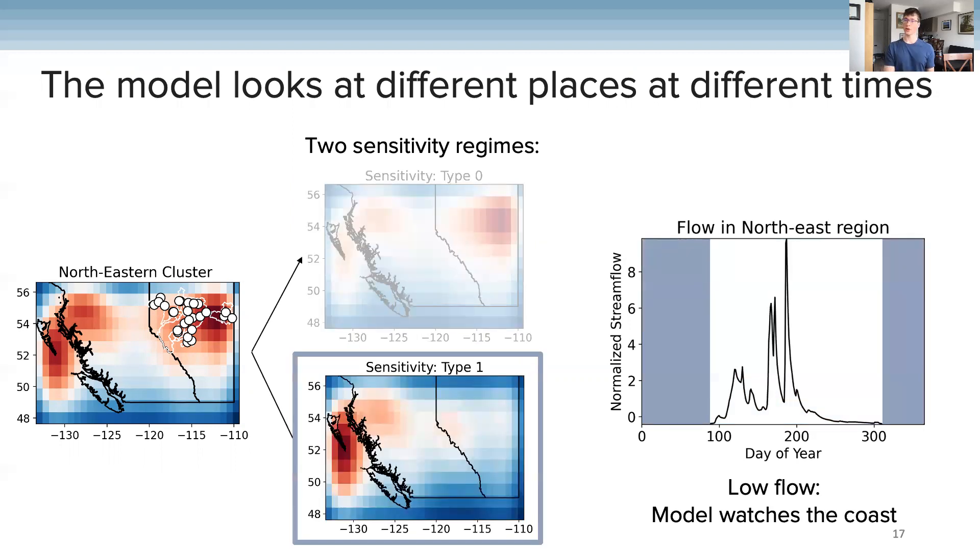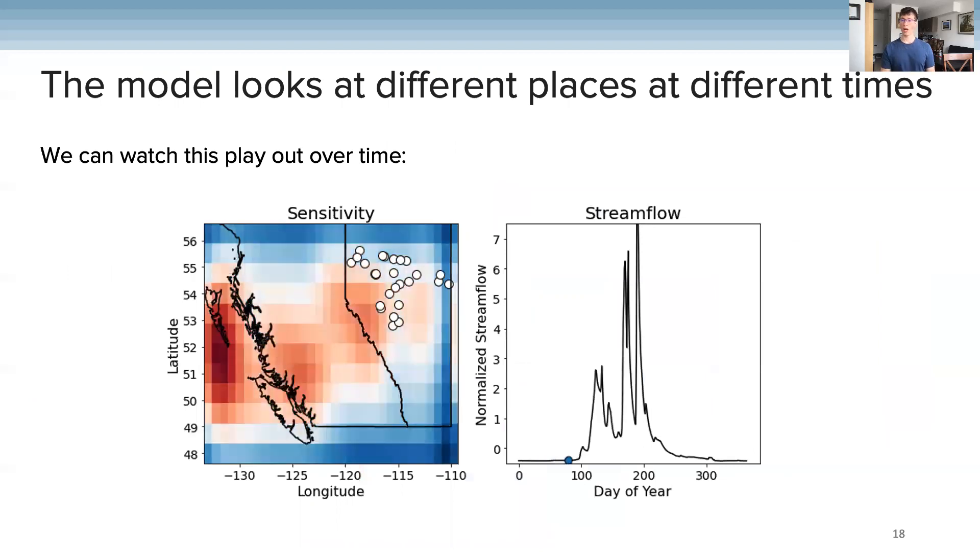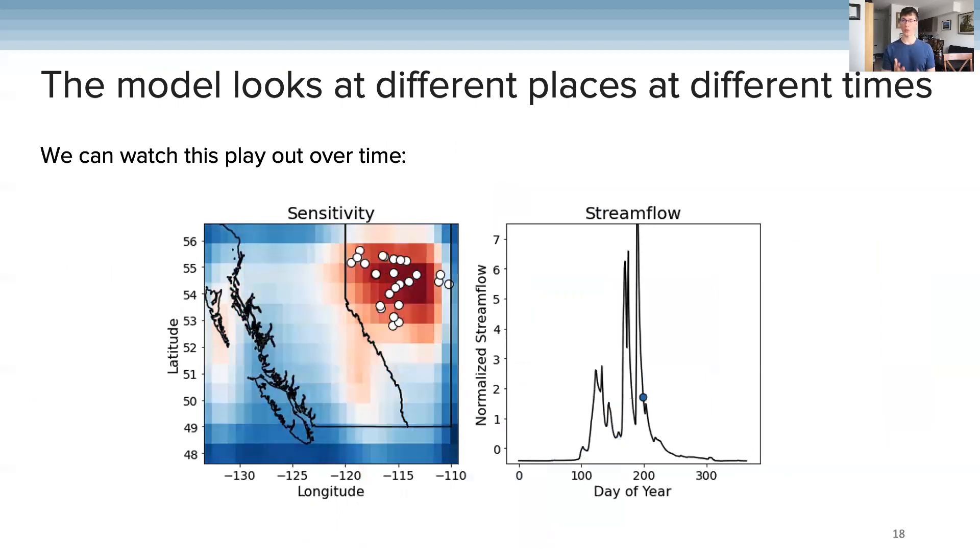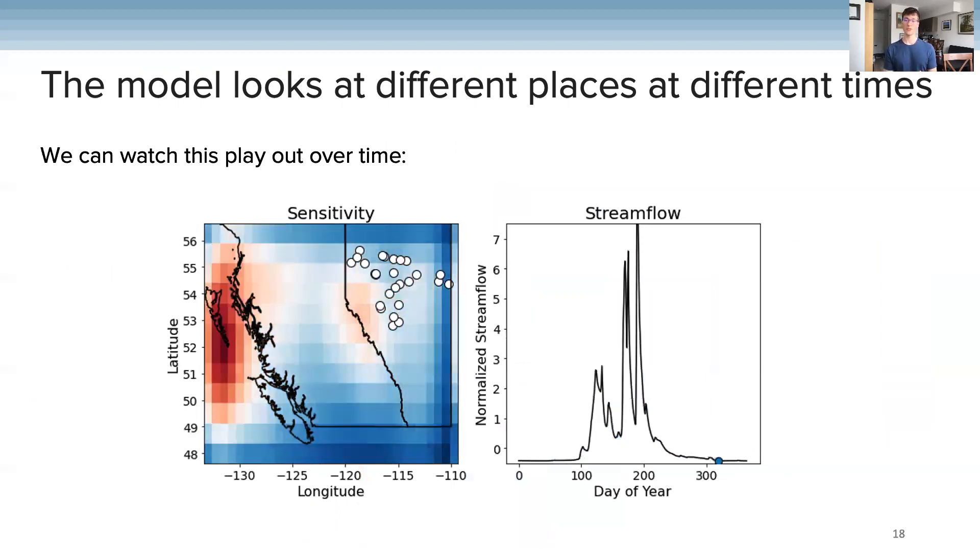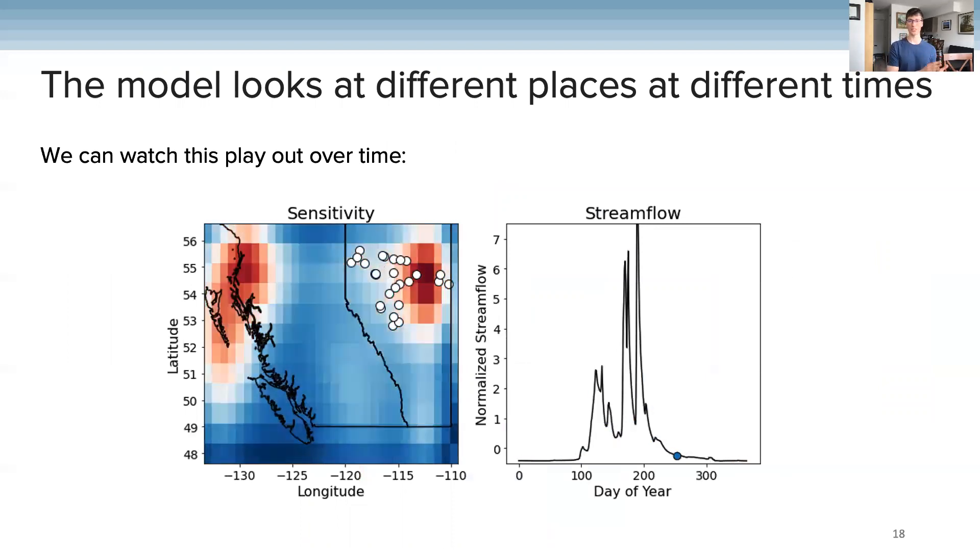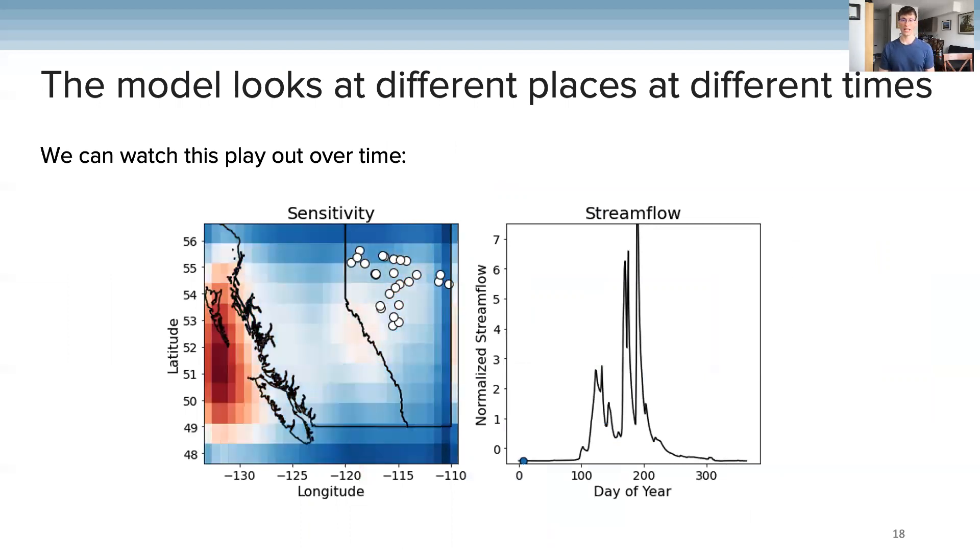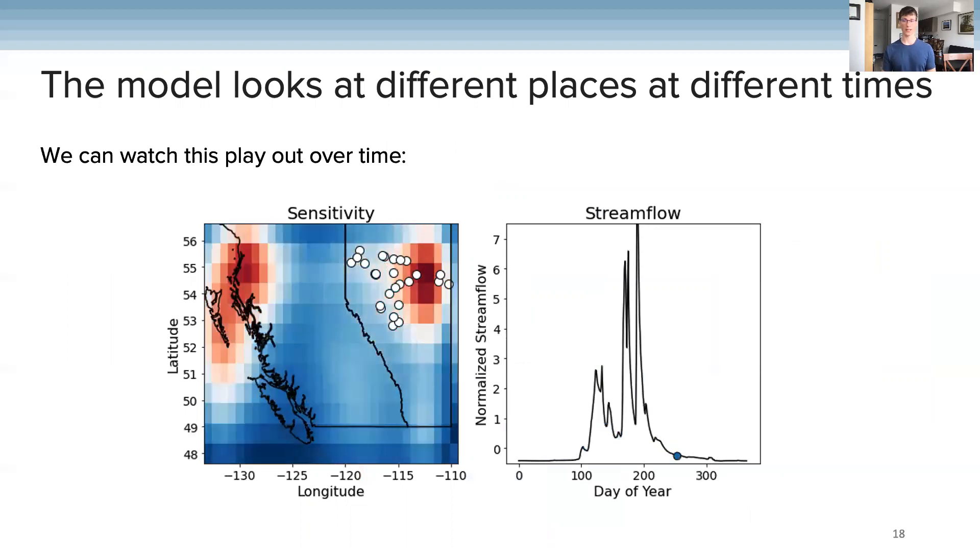But then in periods of low flow, when the river flows don't really change much day to day, the model is actually just watching the west coast. We can watch this play out through time where the red sensitive areas shift from being in the northeast region during high flow season to then the west coast in the low flow season. It's really kind of cool to be able to tease apart where the model is looking through time.